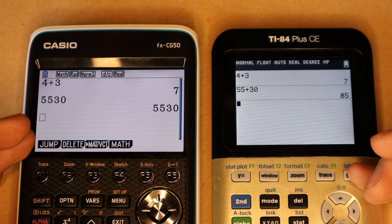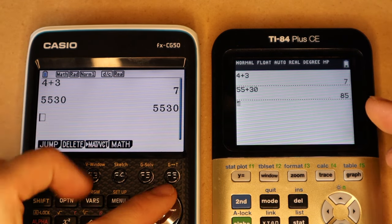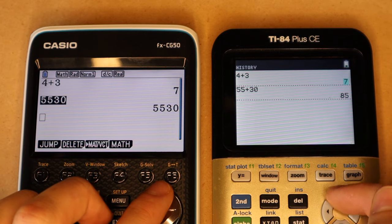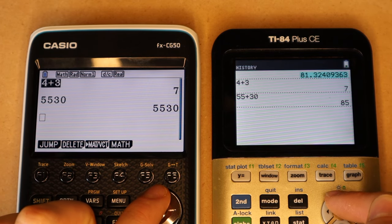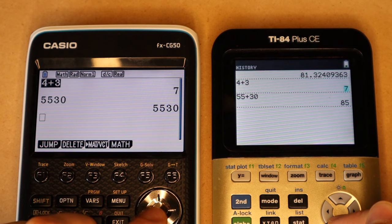And as you keep entering more and more expressions, they will pile up, and you get a sort of list of history. And on both, you can use the arrow pad to go up and select one of your previous calculations, and then copy that into the line below.